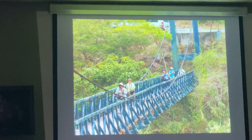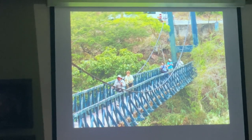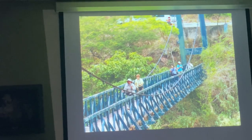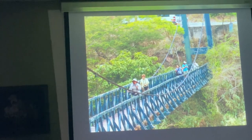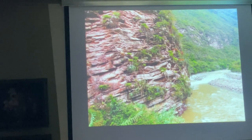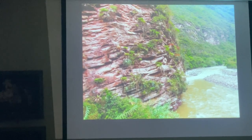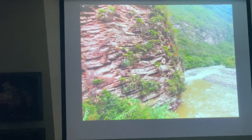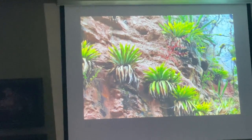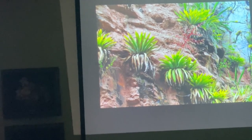This is a famous bridge that we cross every time we go there. You can see Christy, Nancy, and Pam there. It's one from the recent trips. You can see this wall — this is the Utcubamba River, and this is the Utcubamba Valley. New species have been discovered here all the time, including some large cacti. A lot of Tillandsias grow here — fairly large plants, about three to four feet in diameter.